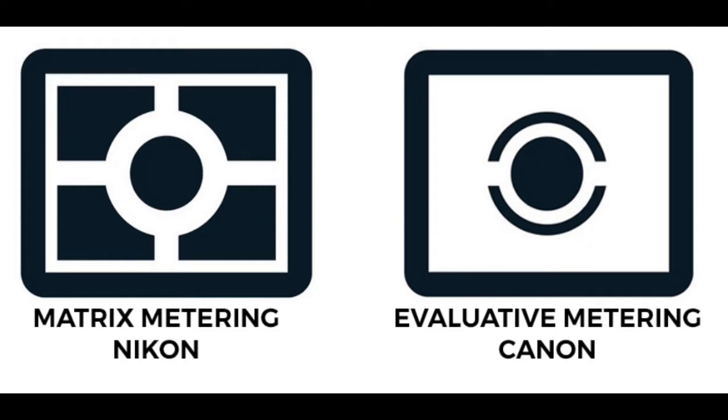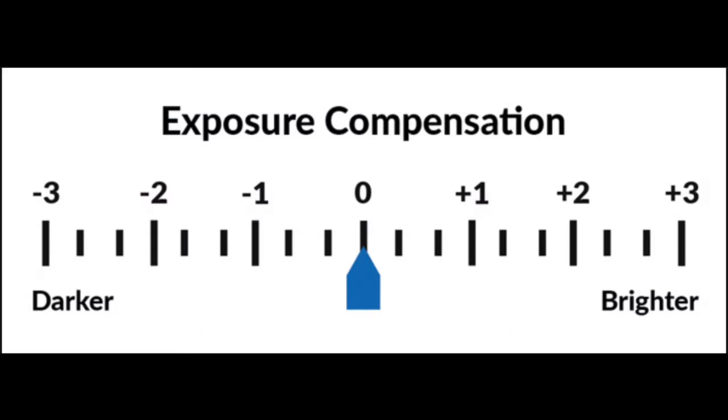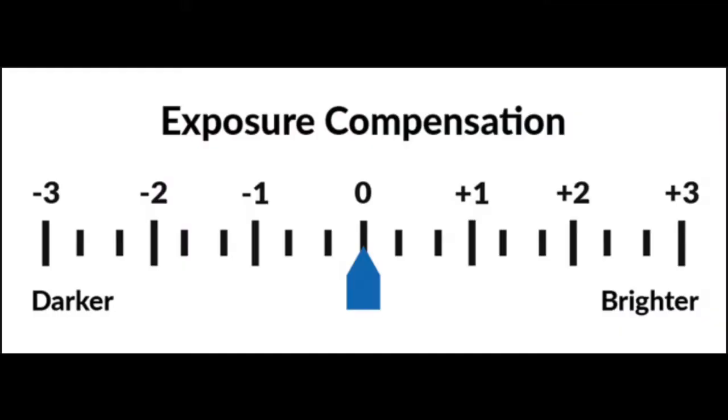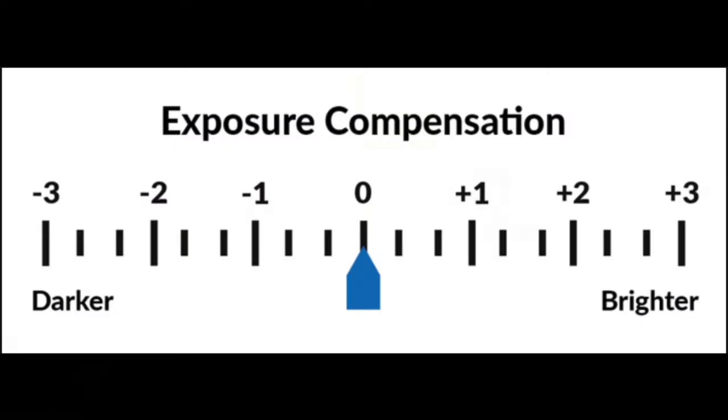The button on your camera for exposure compensation looks like this, and the exposure compensation scale looks like this. As you can see, you've got zero in the middle - to the right is plus, to the left is minus. Where you're at zero, the next segment is one third, then two thirds, then one full stop. It then goes on to one stop and one third, one stop and two thirds, and so on in both the plus and minus directions.